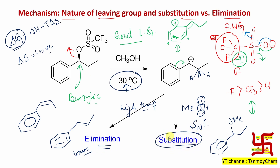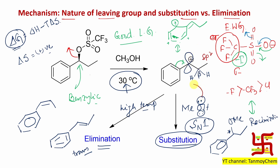But the temperature given here is close to room temperature — essentially ambient conditions — so preference for elimination is less compared to substitution. If we say substitution, it follows an SN1 pathway. Although this carbon is chiral, there will be racemization, because a carbocation is sp2-hybridized and planar. The nucleophile — the lone pair of oxygen in methanol — has equal probability of attacking both lobes of the vacant p orbital, resulting in racemization.